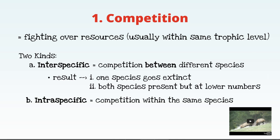In interspecific competition there are two possible results. One, one of the species goes extinct — meaning one was a superior competitor and the other never gets food or nest sites. The other possibility, and more common, is that both species are present but at lower numbers. Often we don't know these competition interactions are happening until one species is removed and we see another species' population go up.